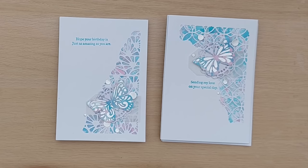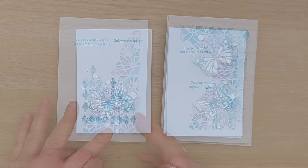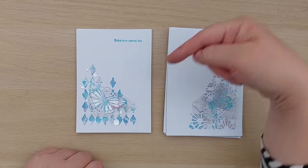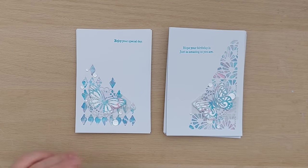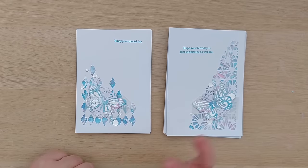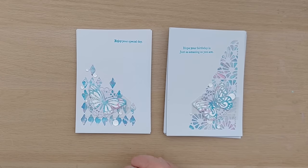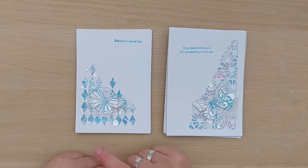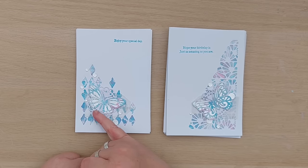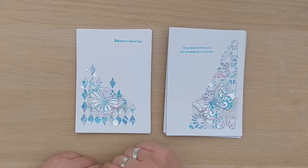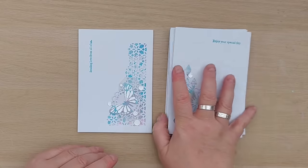This one says 'hope your birthday is just as amazing as you are.' And for this card I put the aperture, a different aperture die, in the bottom left hand corner. I have to do that because I can't remember my left from my right, but if I do that I know what I'm talking about.